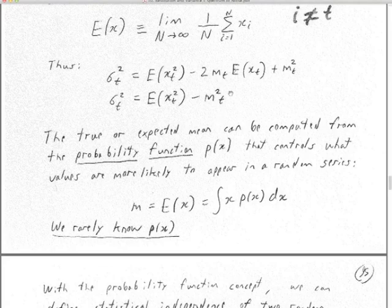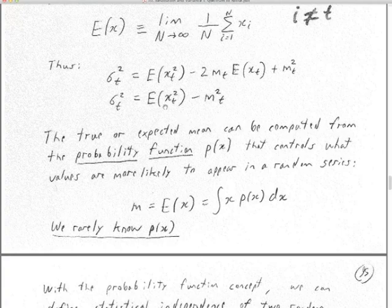We often think that if we have mixed processes — mixed stochastic and deterministic — then M is what the deterministic process gives us, and X would be M plus the stochastic process. Another way to look at it: the true or expected mean can be computed from the probability density function, which we'll call P(X).